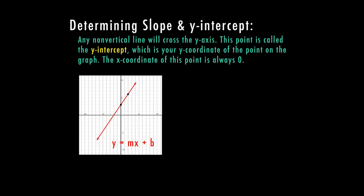This is going to be true of any line that is not proportional. If it's a proportional line, your y-intercept is at zero, which means you will not need the plus b in your equation.